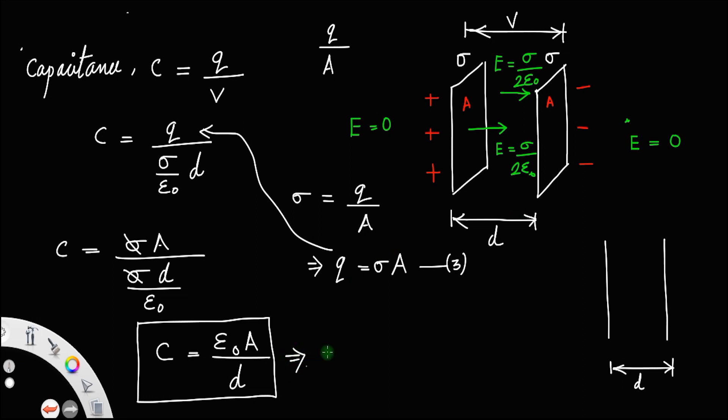Clearly, capacitance is directly proportional to area of the plates. C is inversely proportional to distance between the plates. In this derivation, we took the medium inside the plates as air. Here, air is the medium between these two plates. That is why epsilon 0.